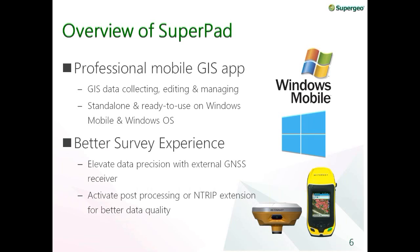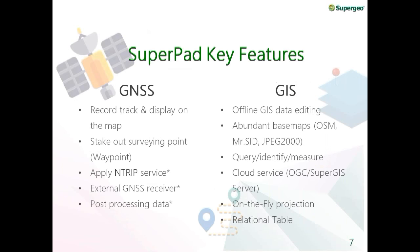SuperPAD provides a better survey experience — you can use it to elevate data precision with an external GNSS receiver and activate post-processing or NTRIP extension for better data quality. The main features are divided into GNSS and GIS parts. For GNSS, you can apply NTRIP service, connect to an external GNSS receiver, or save post-processing level data. For GIS, SuperPAD supports offline data editing, abundant basemaps including OpenStreetMap, raster imports like MrSID and JPEG2000, query, identify, measure, and connection to cloud services like OGC or SuperGeo server.